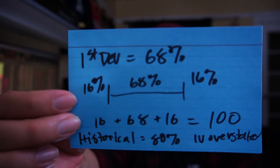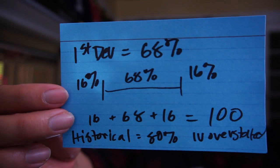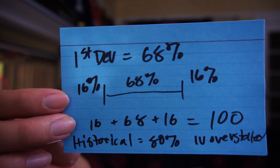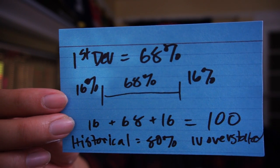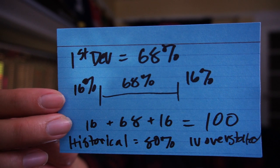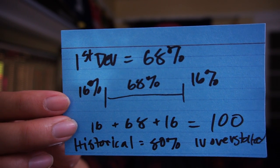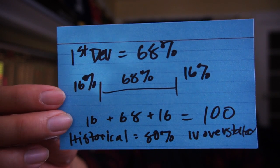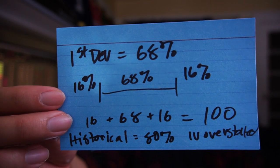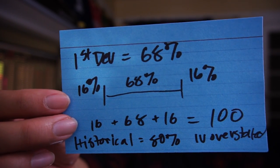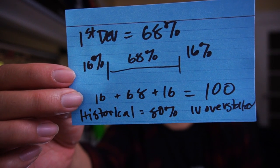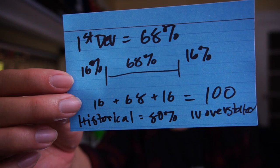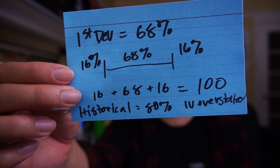I like to set up one standard deviation strangles. One standard deviation covers 68% of the normal distribution. We're going to look to trade the strikes that have a 16% probability of being in the money — or if you're just looking at deltas, we trade the 16 delta. That gives us a 68% probability that the stock will land in between our short strikes. 16 plus 16 plus 68 equals 100, which covers 100% of the distribution.